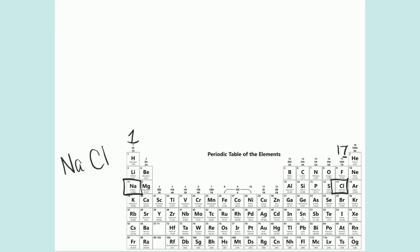How we know: group 1 has 1, group 2 has 2, group 13 has 3, 14, 15, 16, and then 8, except for helium, which has 2.